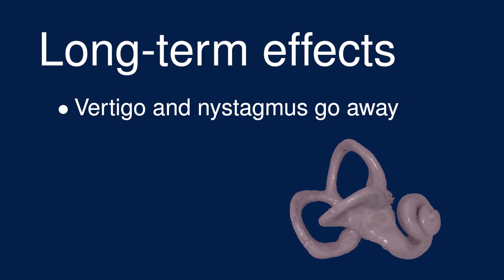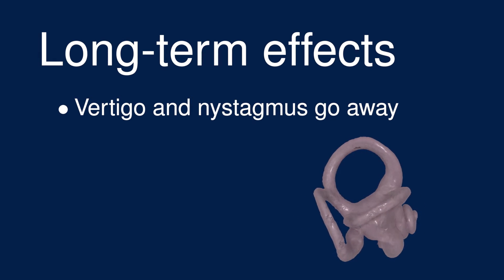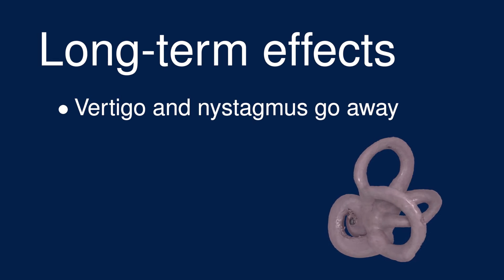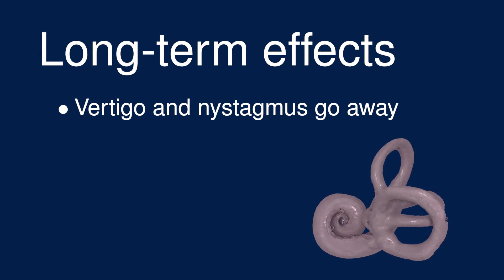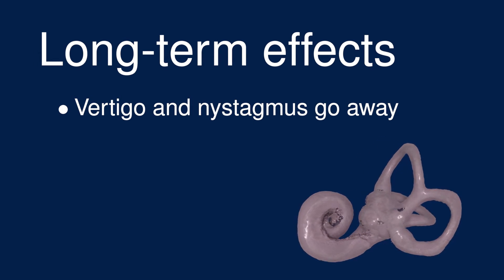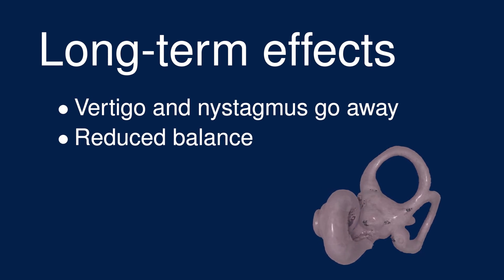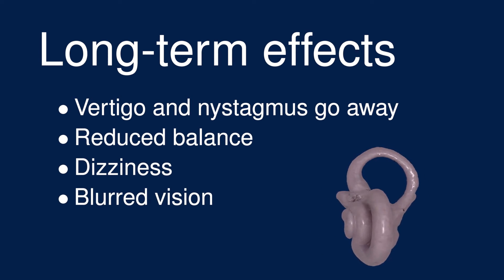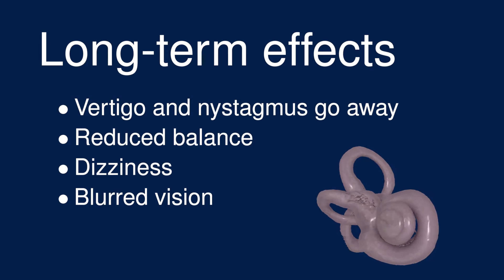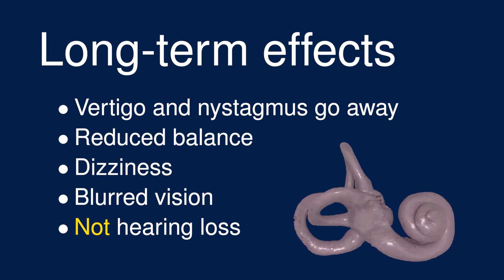This pattern repeats, causing a rhythmic back-and-forth motion called nystagmus. A few days after the onset of symptoms, the brain adapts and the vertigo and nystagmus symptoms go away. In many cases, though, normal function of the vestibular nerve is lost, and even with a healthy vestibular system on one side, patients may notice a reduced sense of balance.